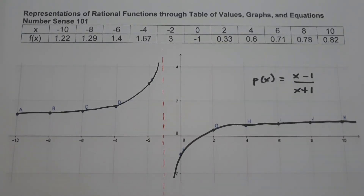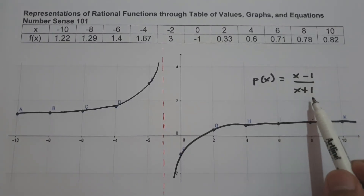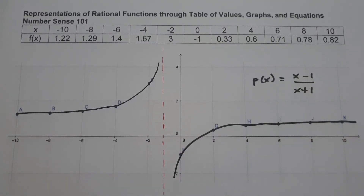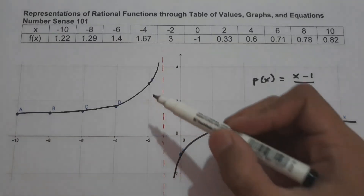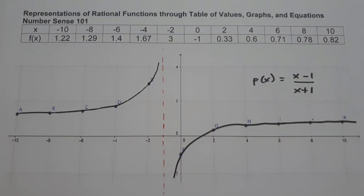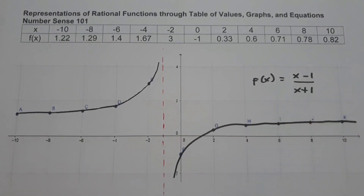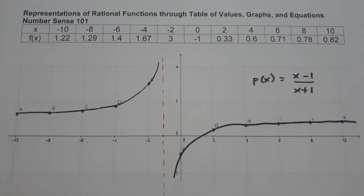Observe that the function f(x) = (x − 1) over (x + 1) is undefined at x = −1. That means if you substitute −1 into the function, it gives us undefined. That's why we cannot connect point E and point F in our graph, because there is a point that makes the function undefined, and that is x = −1. This will be the graph of f(x) = (x − 1) over (x + 1). I hope you've learned from this video. Thank you so much for watching and God bless us all.